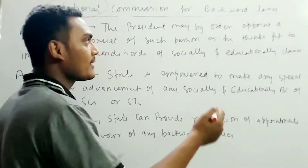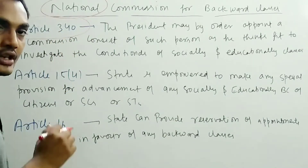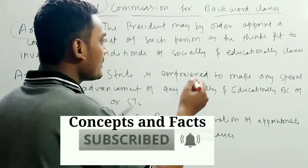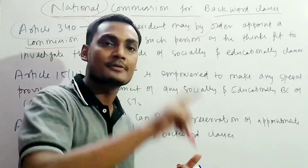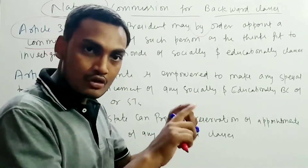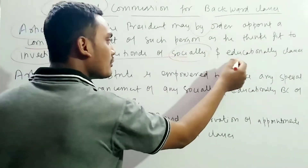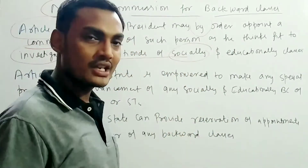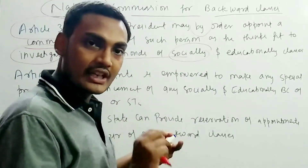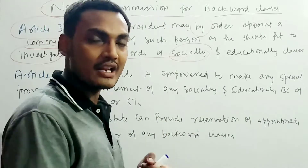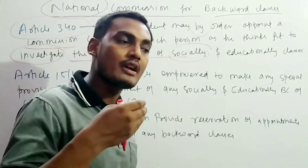Before we move forward for backward classes, we have to discuss some important articles. The first is Article 340, under which the President may, by order, appoint a commission consisting of such persons as he thinks fit — not parliament, but the President — to investigate the conditions of the socially and educationally backward classes of citizens. On the basis of this article, various commissions have been formed, including the Kaka Kelkar Committee and the Mandal Committee.